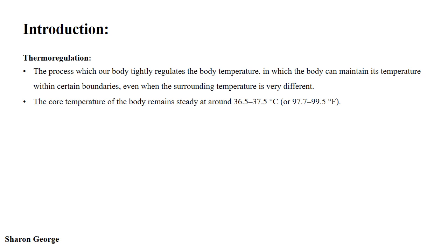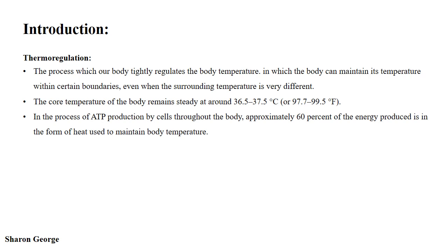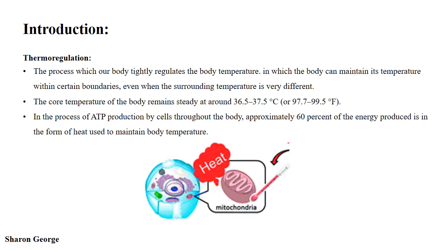In the process of ATP production by cells throughout the body, approximately 60% of the energy produced is in the form of heat, used to maintain body temperature. Thermoregulation is an example of negative feedback.